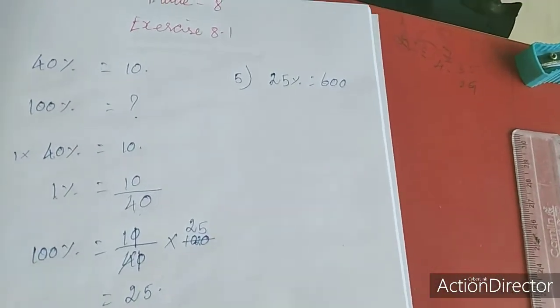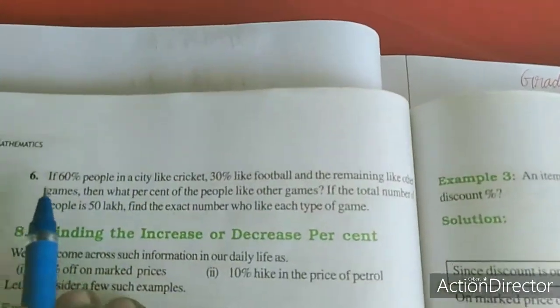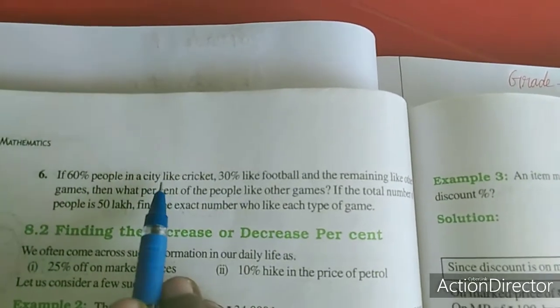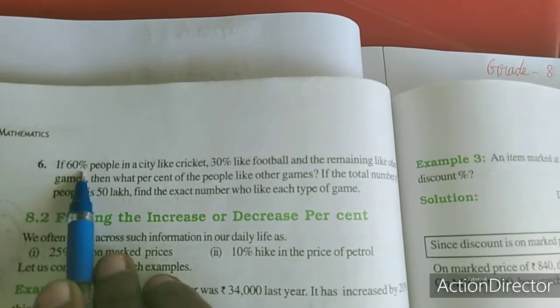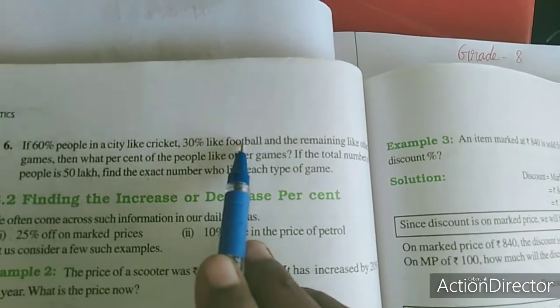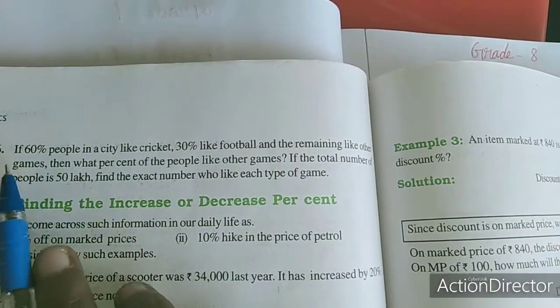Now I am moving to the sixth sum. If 60% people in a city like cricket, 30% like football, and the remaining like other games.